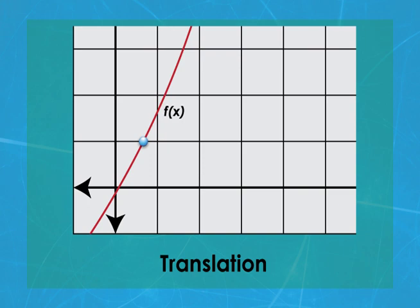Suppose the graph of a function, f of x, looks like this. To translate it in the positive x direction, then change the input value as shown. This will work with any function and any value for a. To translate the function in the positive y direction, then change the output value as shown. This also will work for any function and any value for a.